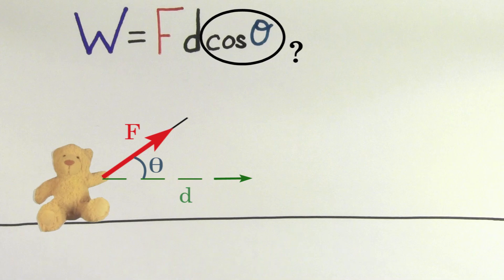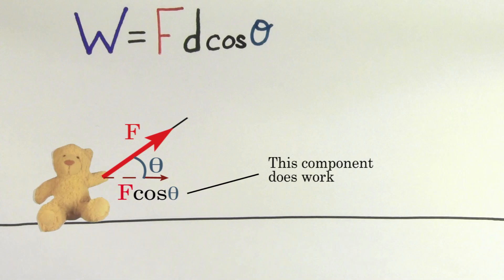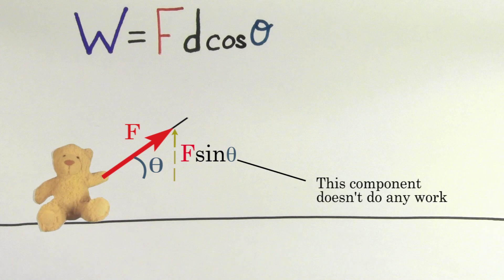You might be wondering what this cosine theta is doing in here. Cosine theta is in this formula because the only part of the force that does work is the component that lies along the direction of the displacement. The component of the force that lies perpendicular to the direction of motion doesn't actually do any work.